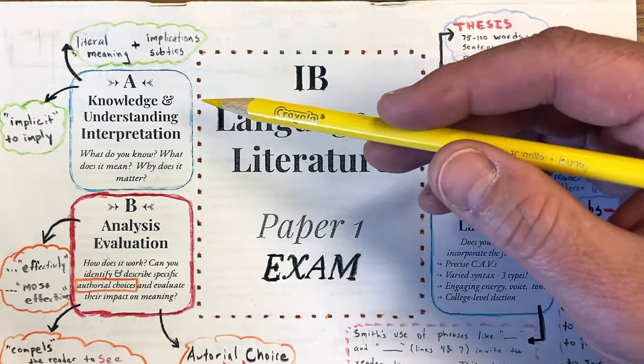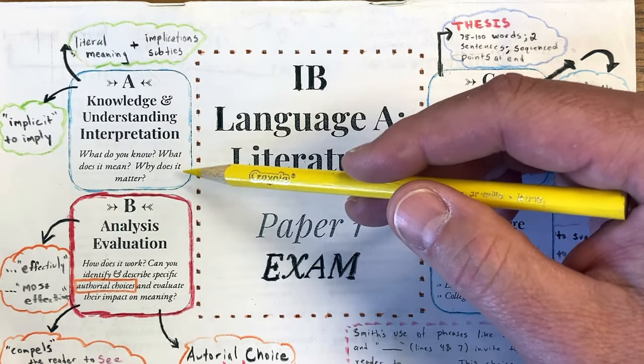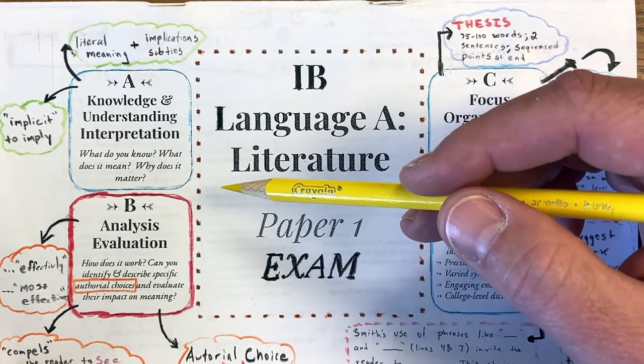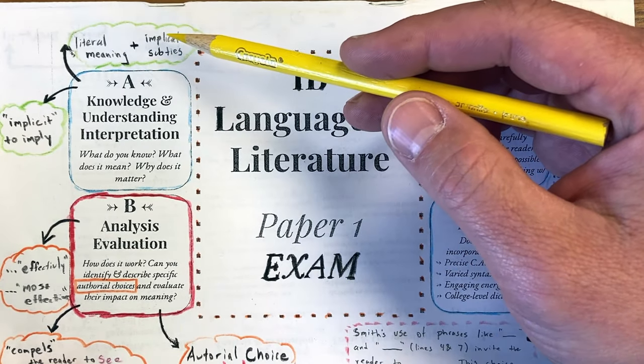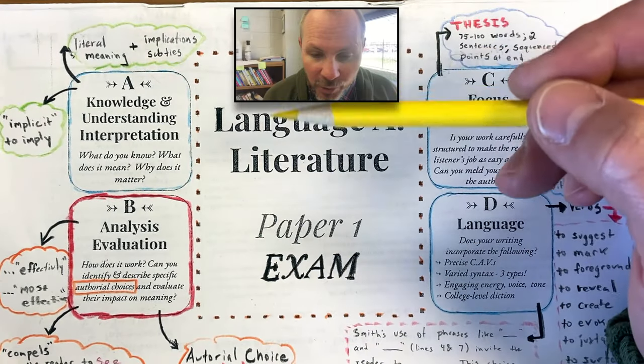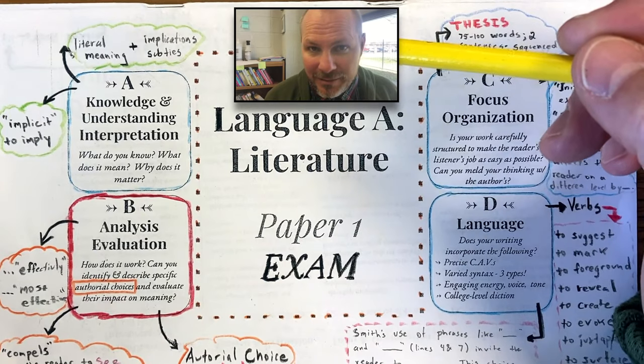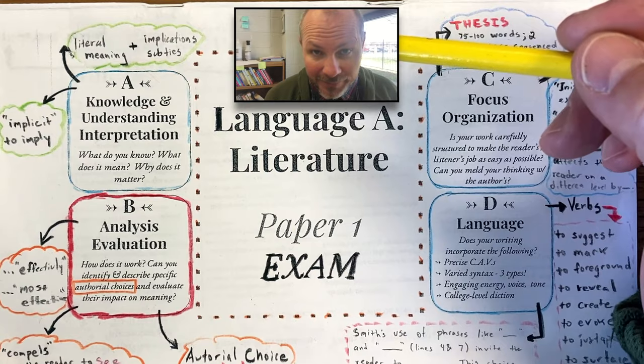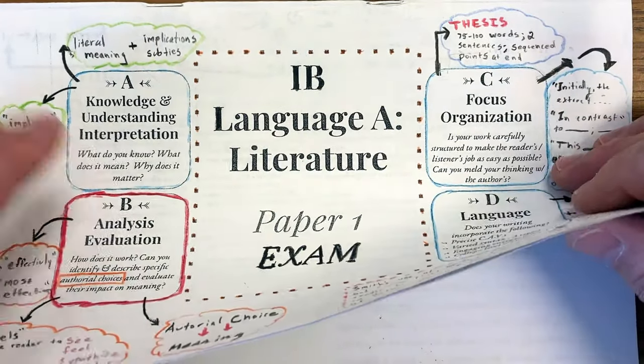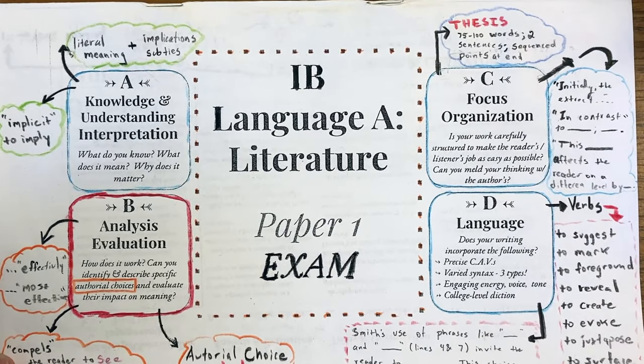Criterion A: knowledge and understanding and interpretation. What do you know? What does it mean? And why does it matter? That's this word implication. When you read for this paper, you want to be reading looking for value. The literal meaning, and then what are the implications and subtleties. If you can use the word implicit or imply in your examination, that's a good thing. When you're working with something based on a rubric, it's helpful if you can make the assessor's job easy by keying into that thing you're supposed to do. You do that when you use keywords like implicit or imply.